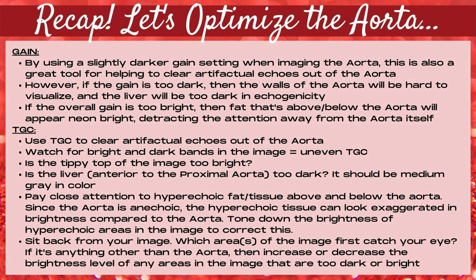Sit back and take an overall look at your image. Is the tippity top too bright? Is the liver, which is anterior to the proximal aorta, too dark? It should be medium gray. Pay close attention to the hyperechoic fat and tissue above and below the aorta — since the aorta is anechoic, hyperechoic tissue can look exaggerated in brightness. Tone down any brightness of hyperechoic areas. Whichever area of the image first catches your eye — if it's anything other than the aorta — adjust brightness so the aorta becomes the star.